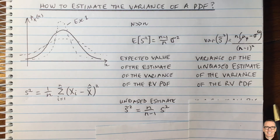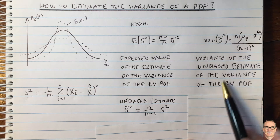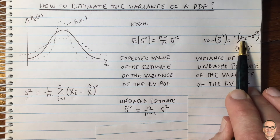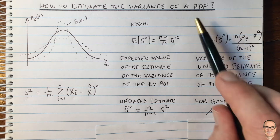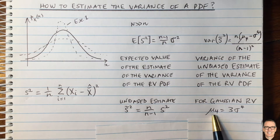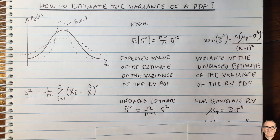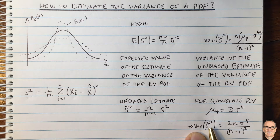Let's put a bit more example into this. For one particular case of this formula, if your original random variable is a Gaussian random variable, then we know the fourth moment is given by this equation here. We substitute this in and we get this expression for the variance of our unbiased estimator.